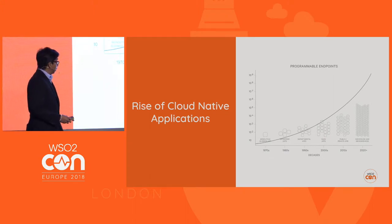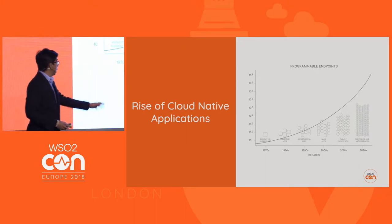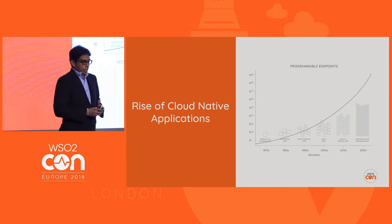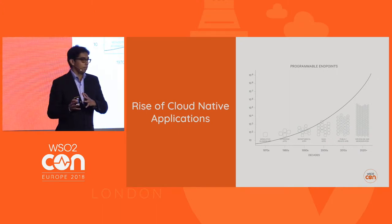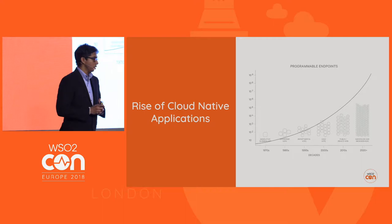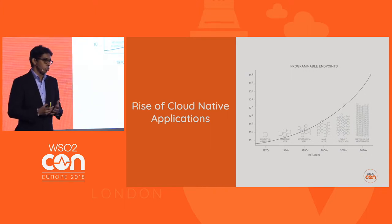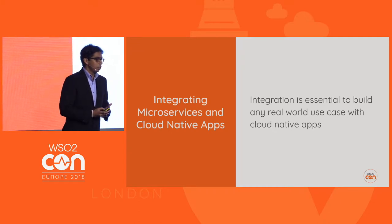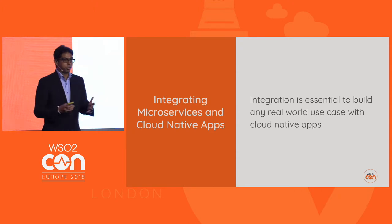Cloud-native applications are on the rise. We used to have API-driven architecture, but now we are segregating further into microservices and serverless functions. Your capabilities are dispersed across the network and connected over network calls. That's why integration of cloud-native applications is becoming more important — you have to deal with not three or four services, but maybe hundreds. Integration of those network-segregated components is absolutely essential.